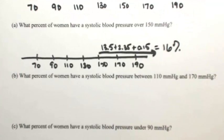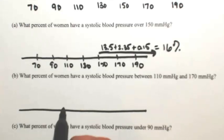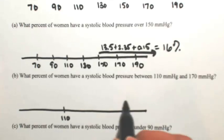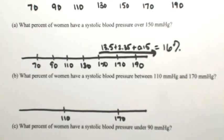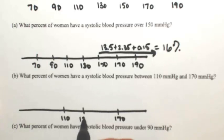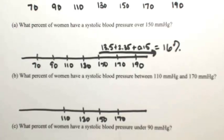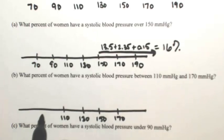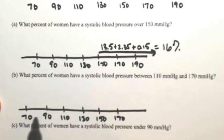Let's do another one. What percent of women have a systolic blood pressure between 110 and 170? So again, I'm going to draw this line, so between 110 and 170. Again, the mean is at 130, and then 90, 70, and 190.